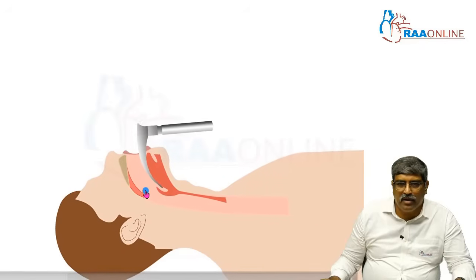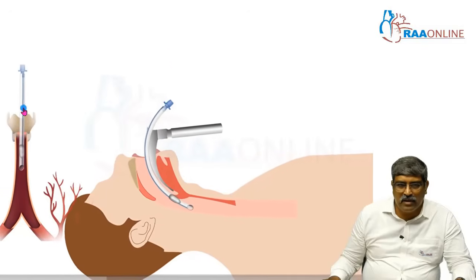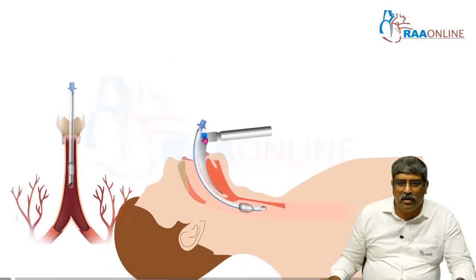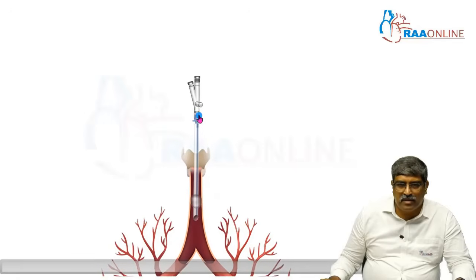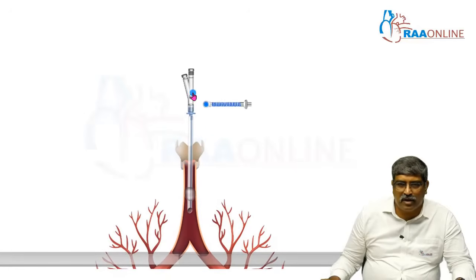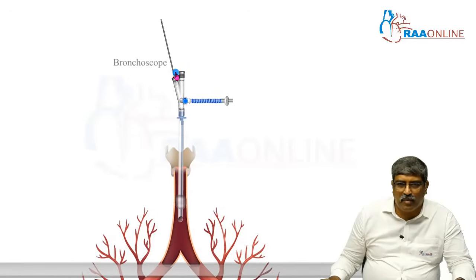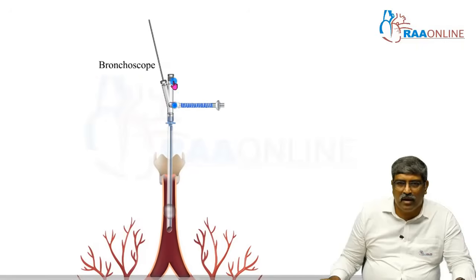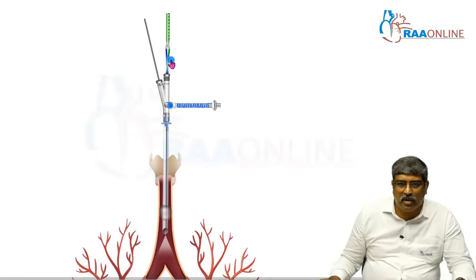After laryngoscopy, a single lumen endotracheal tube is introduced — you can see the single lumen tube going in. The multiport connector is attached to the tube; the circuit is attached to one port, fiber optic bronchoscopy passes through another port, and the EZ blocker is introduced through the other port.